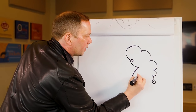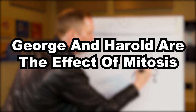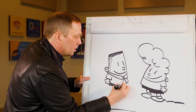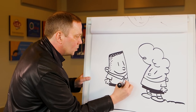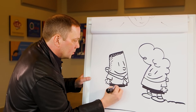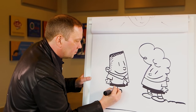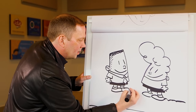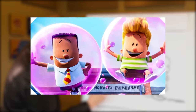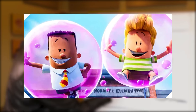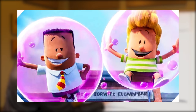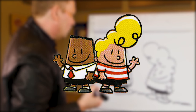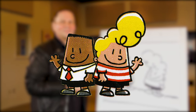The last entry is George and Harold are the effect of mitosis. This is a bit of a joke theory suggesting that in every media release, both characters have nearly identical voices, and that even though only one of them got first place in something, they both ended up going to the same college. The theory doesn't have a lot of evidence to back it up, but it's a unique way of looking at George and Harold.